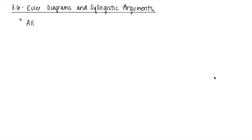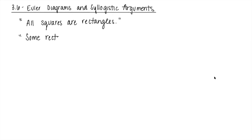We're going to deal with these quantifiers: all, some, none. You've heard phrases like 'all squares are rectangles,' and other quantifiers like 'some rectangles are squares.' We've all used quantifiers at some point to classify things.